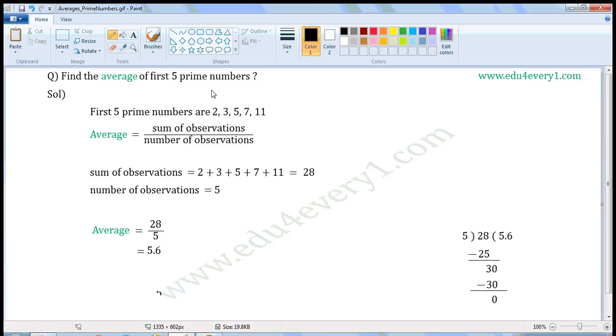Find the average of first 5 prime numbers. First 5 prime numbers are 2, 3, 5, 7, and 11.